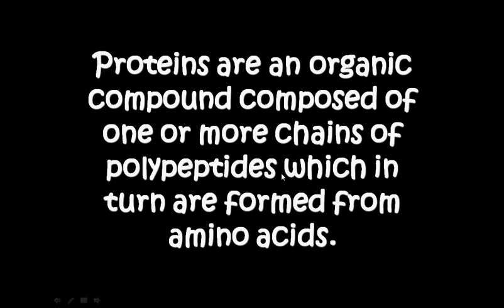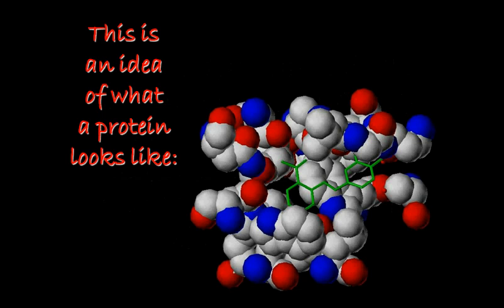Proteins are organic compounds, meaning that they're based on carbon and they're found in living things. They're composed of one or more chains of polypeptides, which are in turn formed from amino acids. Proteins are very large molecules and they take very unique shapes. They can be hundreds of amino acids long, and it's the sequence of amino acids that makes each protein unique.